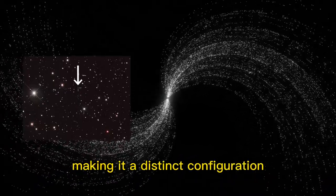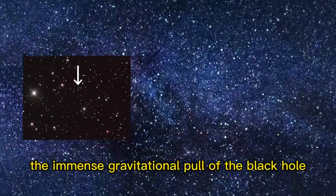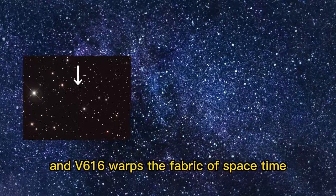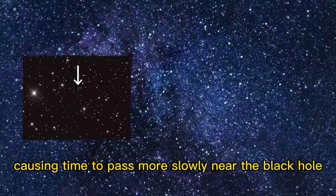The immense gravitational pull of the black hole in V616 warps the fabric of spacetime, causing time to pass more slowly near the black hole.